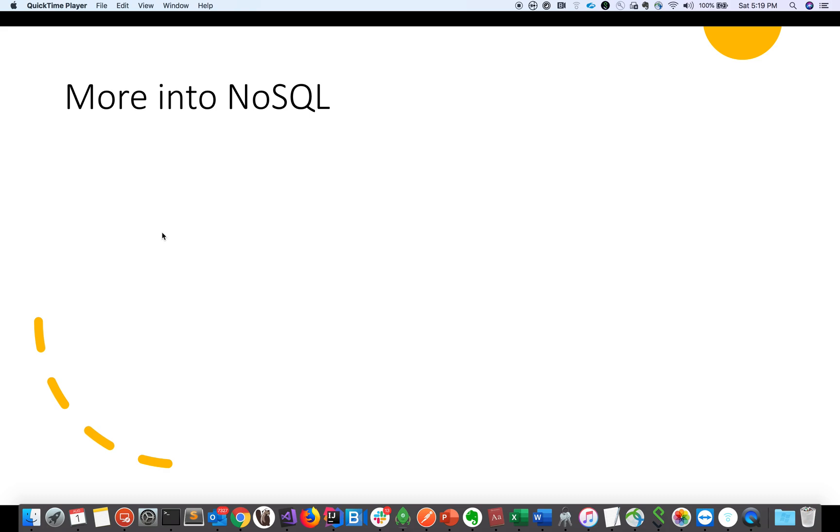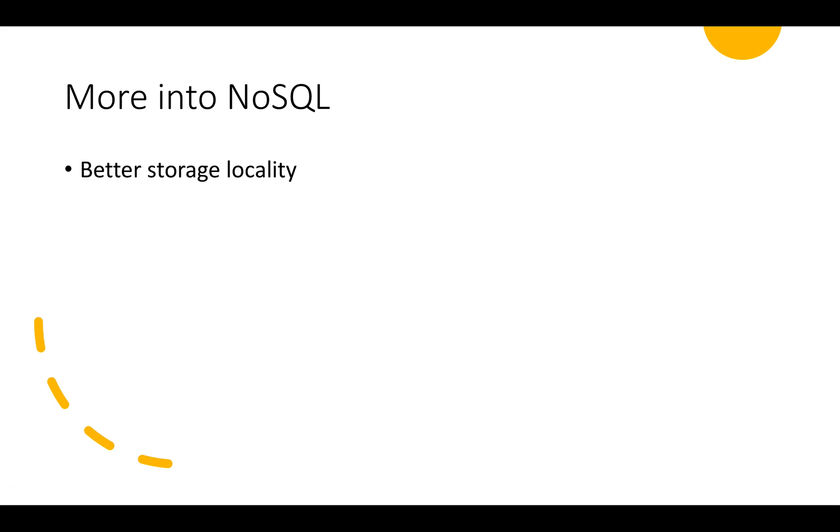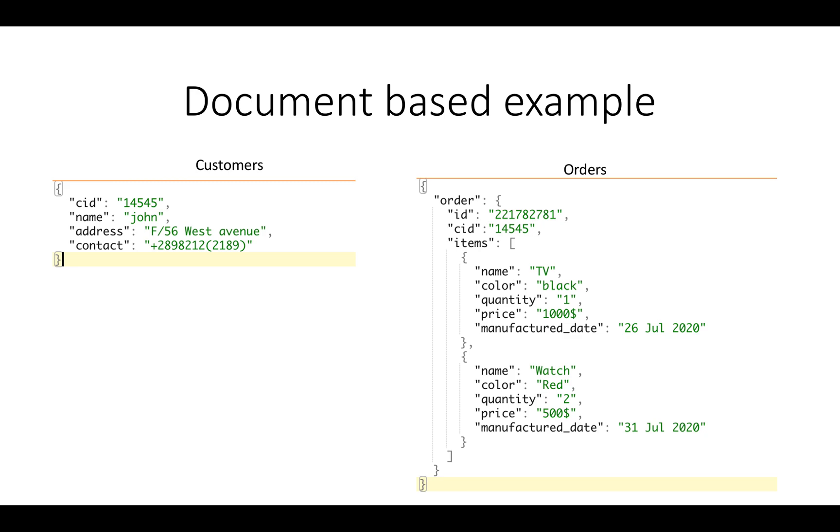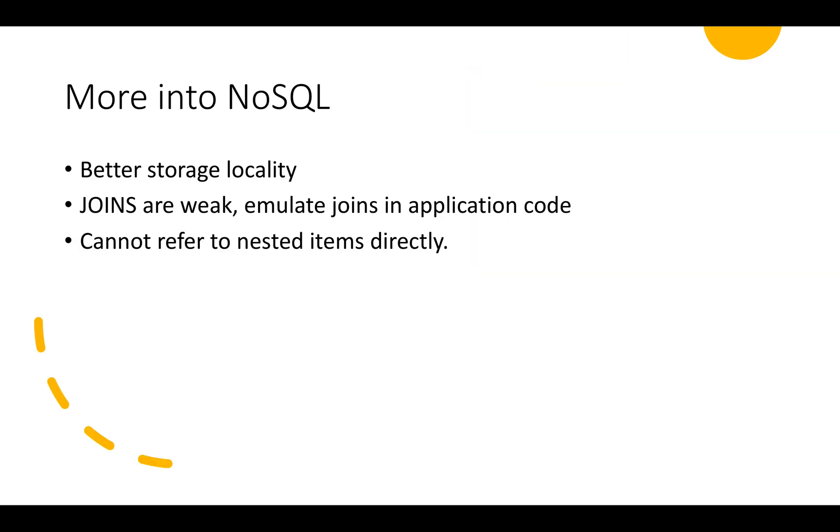Let's now talk about NoSQL more. NoSQL has better storage locality. In cases where we have to load the document entire at once, NoSQL can be beneficial because when we store data into multiple tables, we might require more index lookups and more disk seeks which can be slower operations. Now NoSQL does not provide us the join options. We have to emulate the joins in the application code. Let us take the previous example. If we have to find all the locations where black TV is sold out, then we have to find out all the orders where the black TV was sold out and we have to join it with the customer document in the application layer. So joins can be weak in NoSQL and it is difficult to refer to the nested item directly.